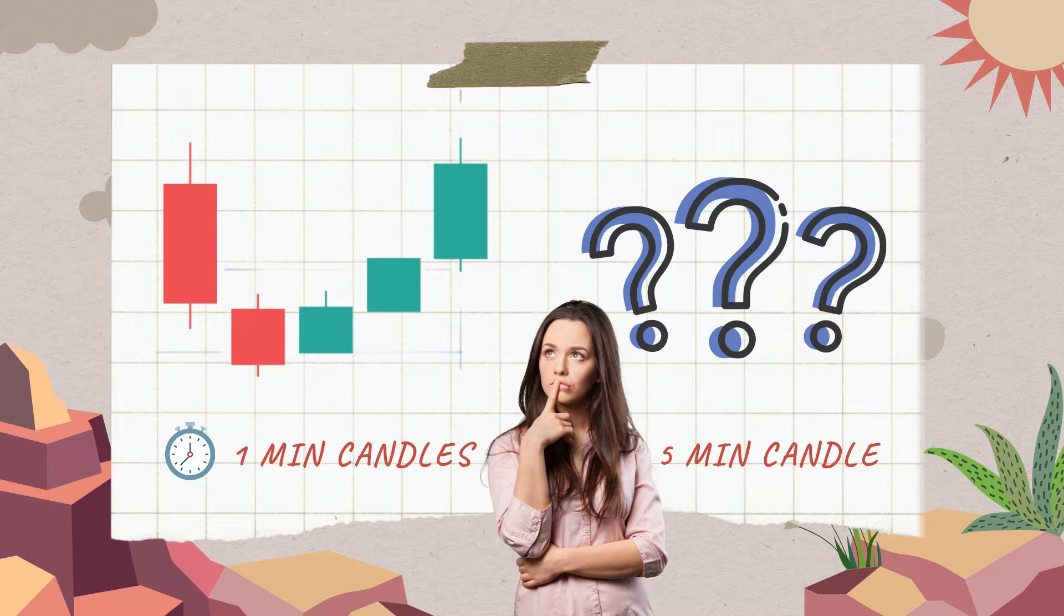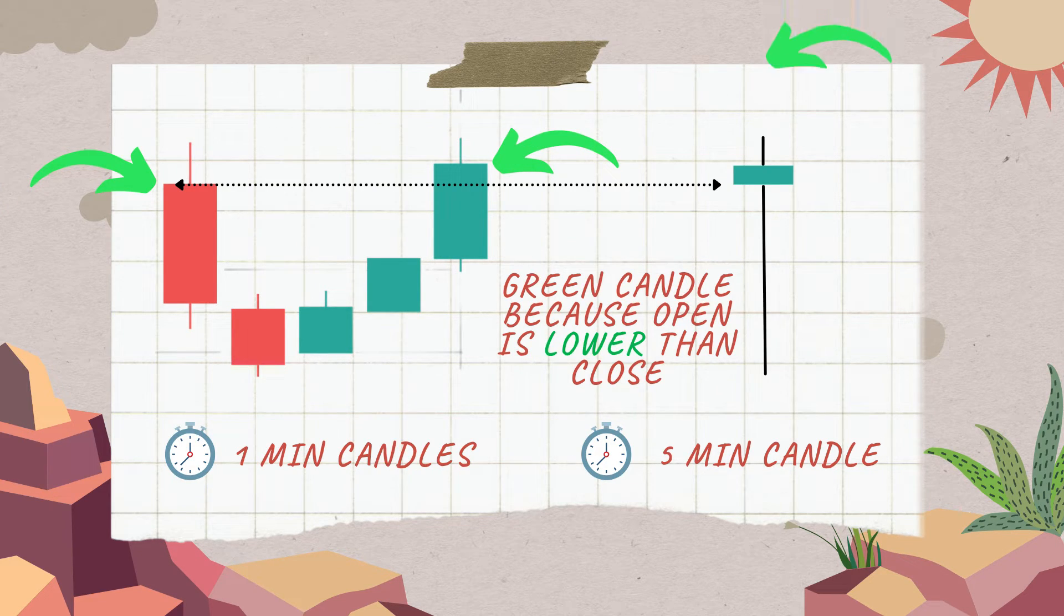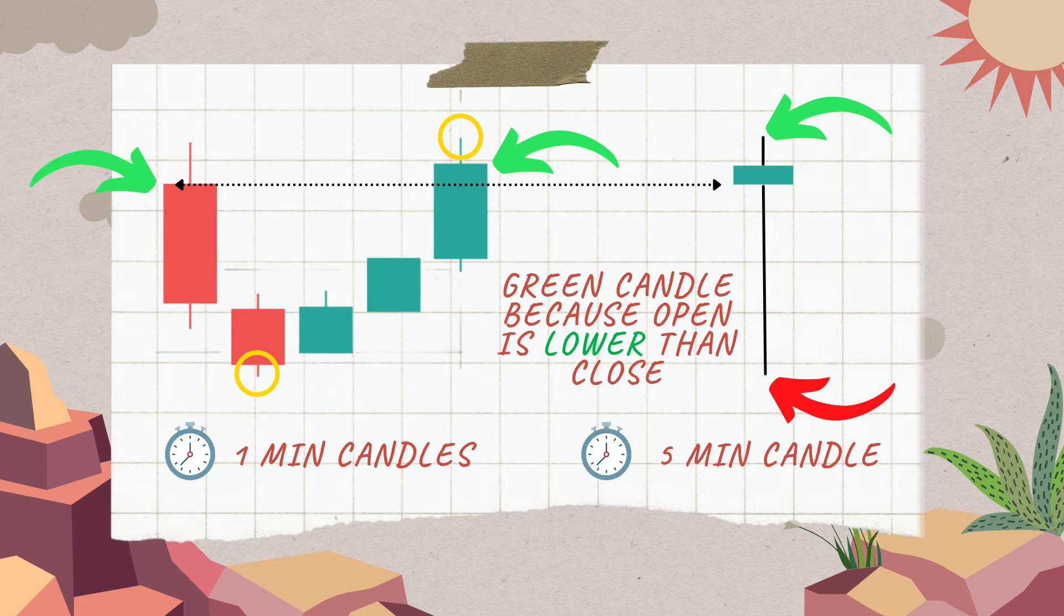Let's say you have these 5 1-minute candles. Now you want to see the price action using 5-minute candles. Do you think this 5-minute candle will be red or green? Well, let's see. The first candle opened here, and the last closed here. So, it's a green candle. And this is the highest the price can go. And this is the lowest the price can go, because of the highest and lowest wicks.